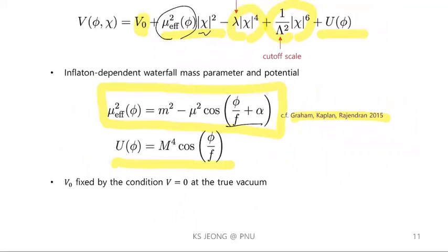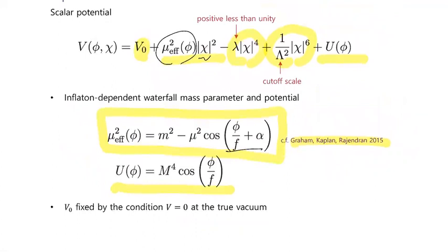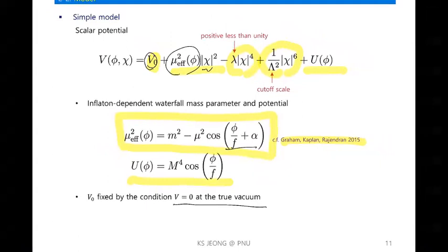For the axion potential, we simply consider a cosine-type potential, which we assume is induced by some non-perturbative effects. The constant term is fixed by the condition that the cosmological constant vanishes at the true vacuum. This is our model — it is very simple.